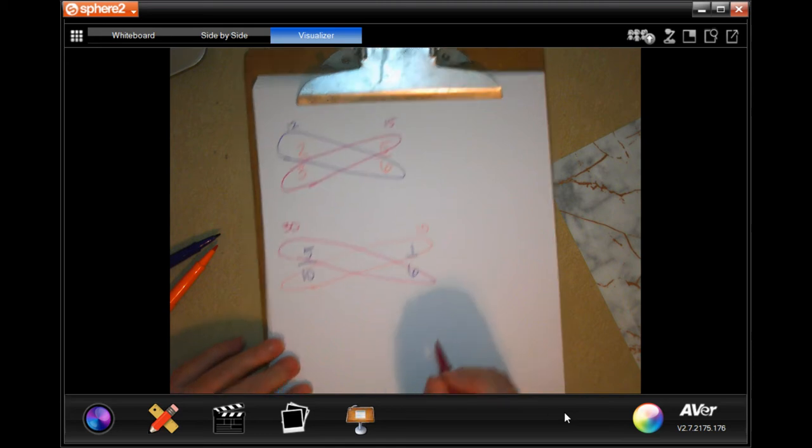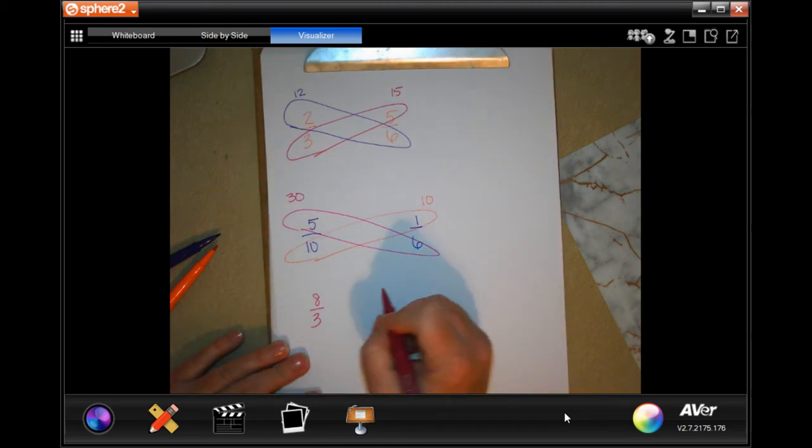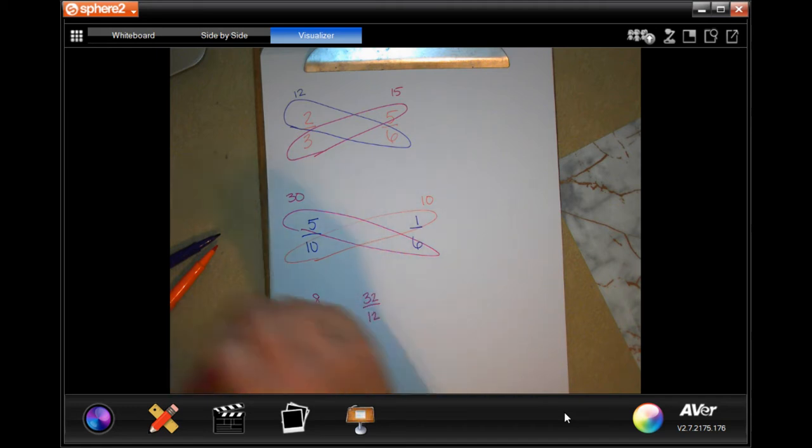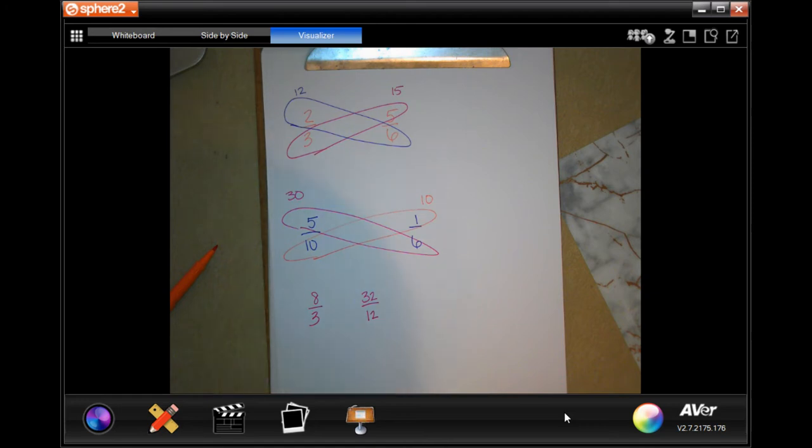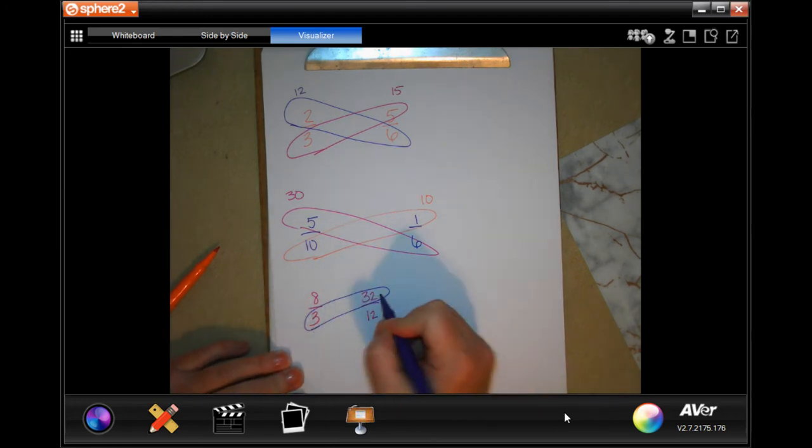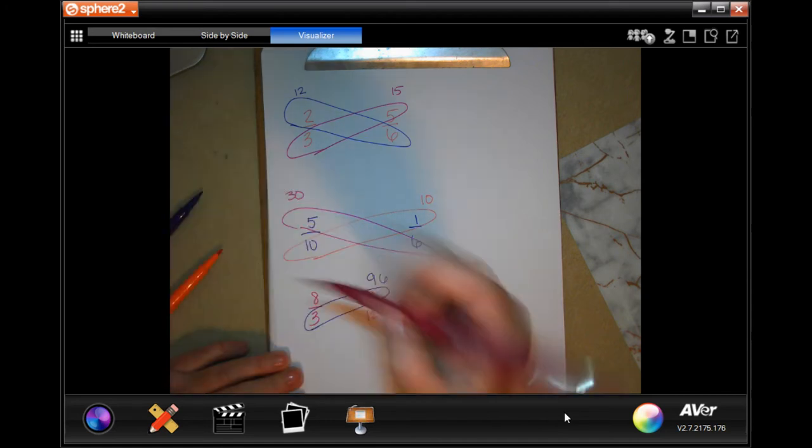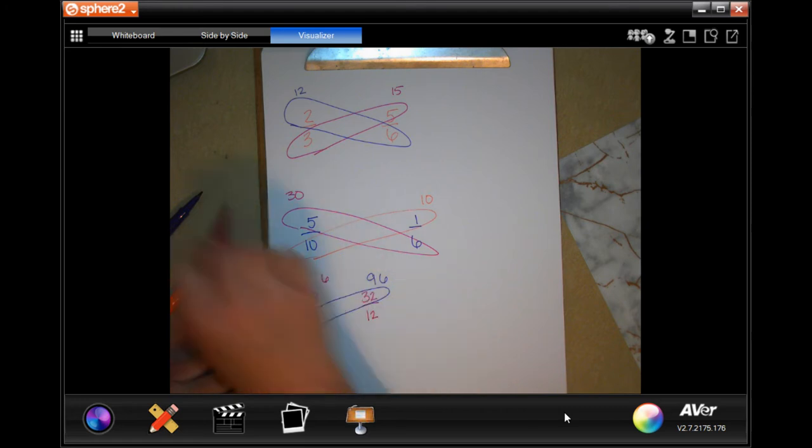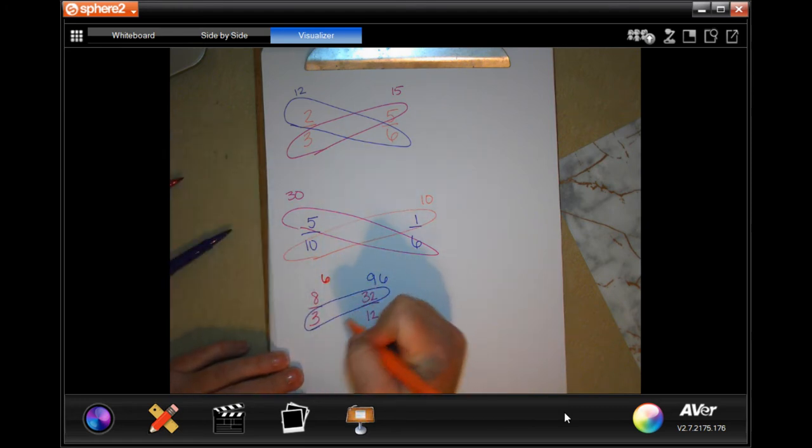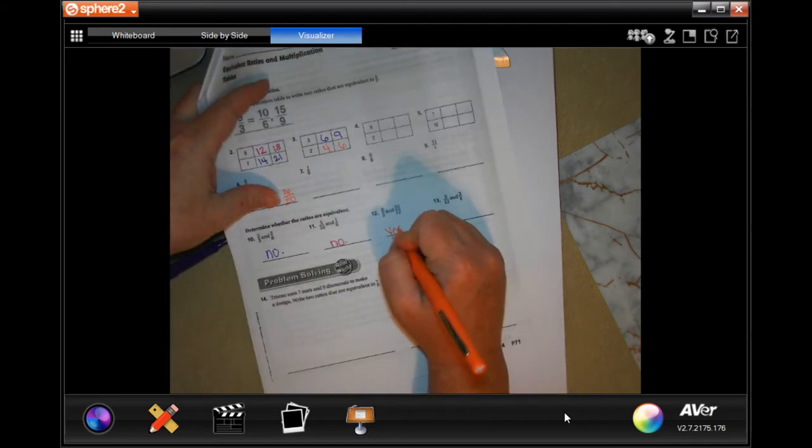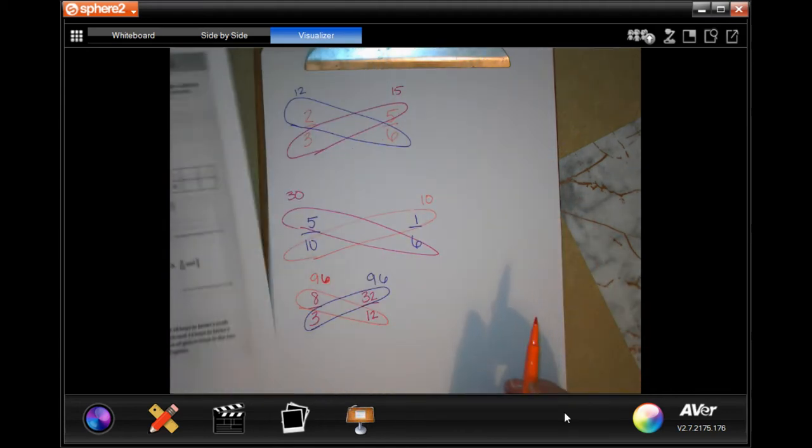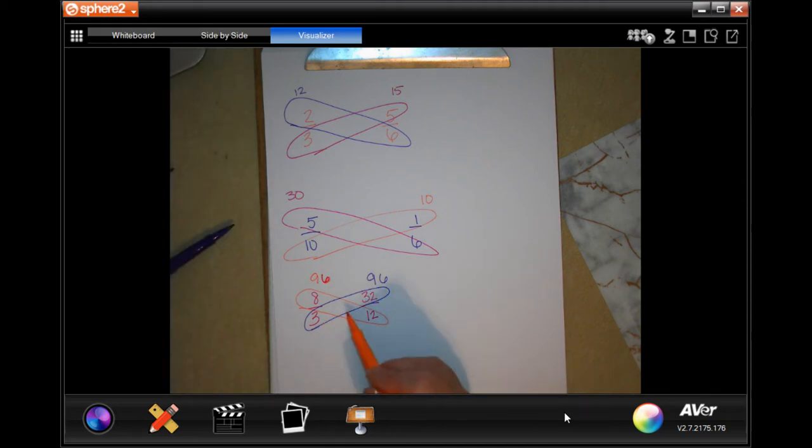All right, our next one is 8 over 3 and 32 over 12. So now 3 times 32, well, 3 times 2 is 6 and 3 times 3 is 9. And 8 times 12, well, 8 times 2 is 16, 8 times 1, there we go. So we have 96 and 96. So number 12 is yes. You guys try and do number 13. You guys have examples on how to do it, so you're just diagonal and multiply.